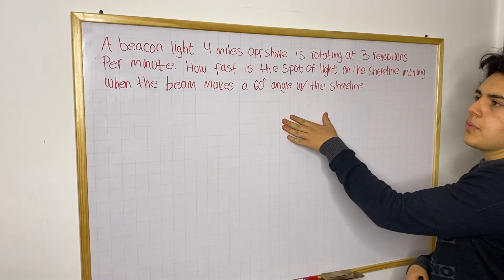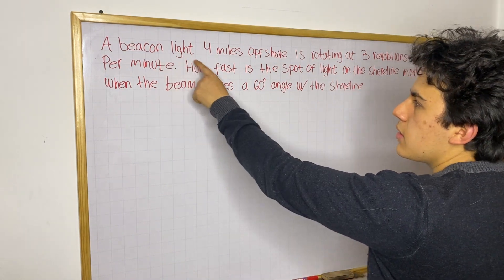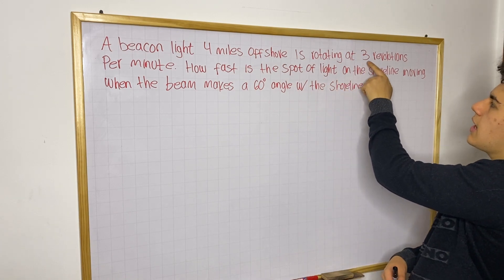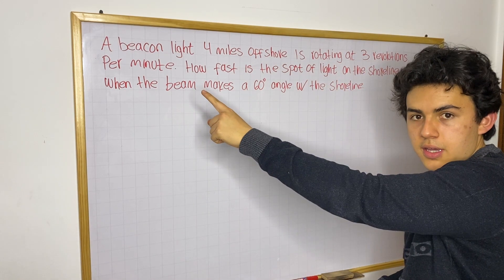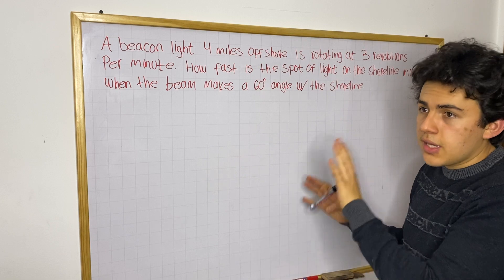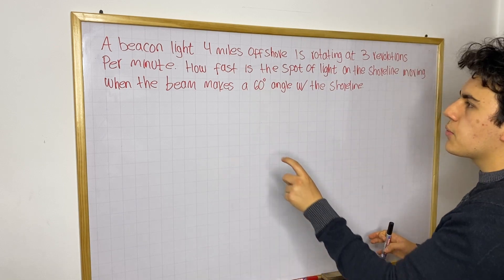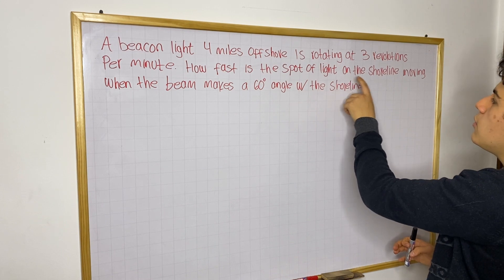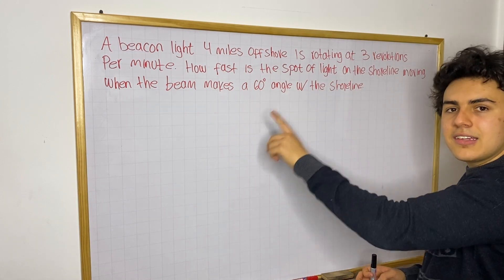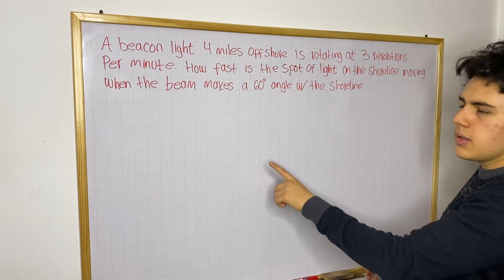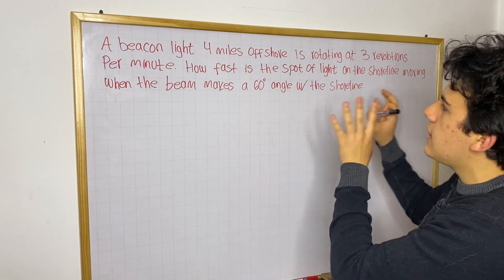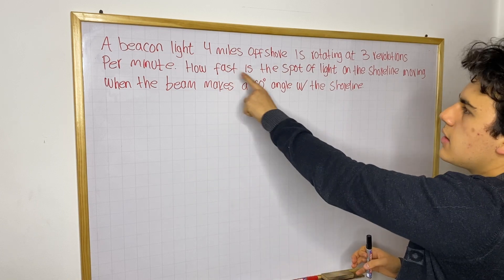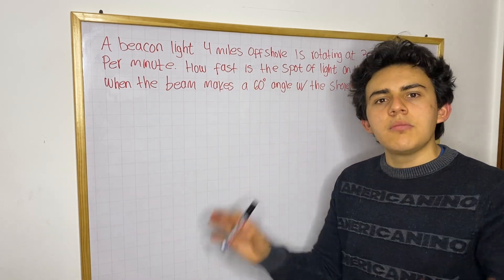So we have this problem. There's going to be a beacon light four miles offshore, and this beacon light will be rotating at three revolutions per minute. That is going to be a rate of change that we're going to use in a pretty interesting way. We need to figure out how fast this spot of light is moving on the shoreline when the beam makes a 60-degree angle with the shoreline. That's our main goal.